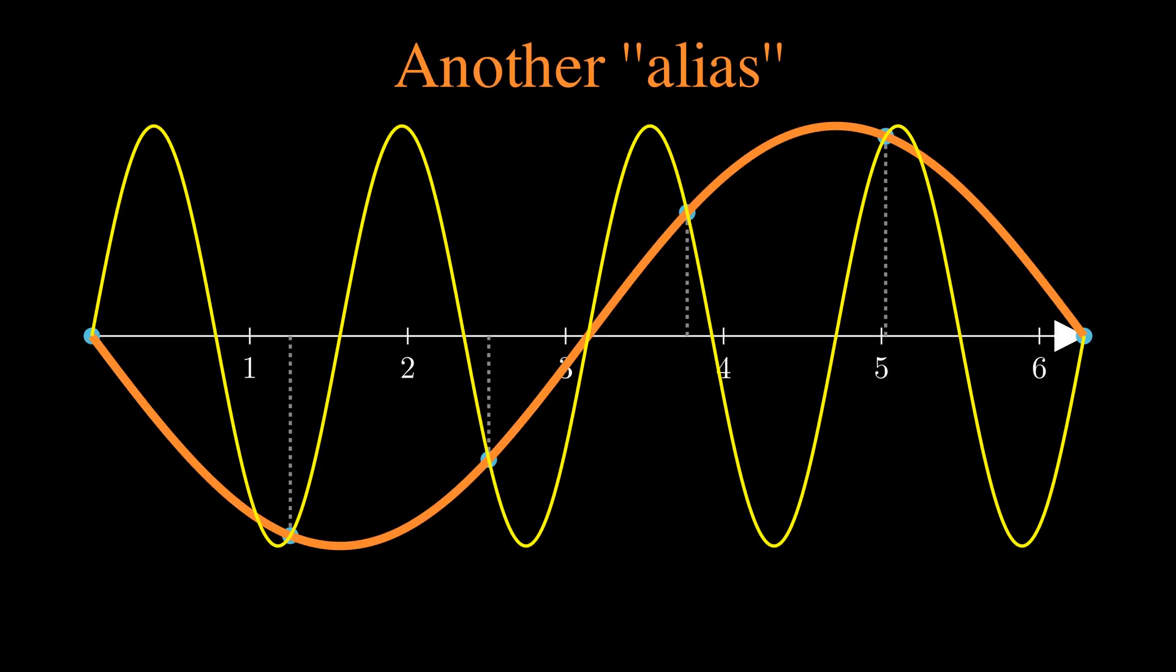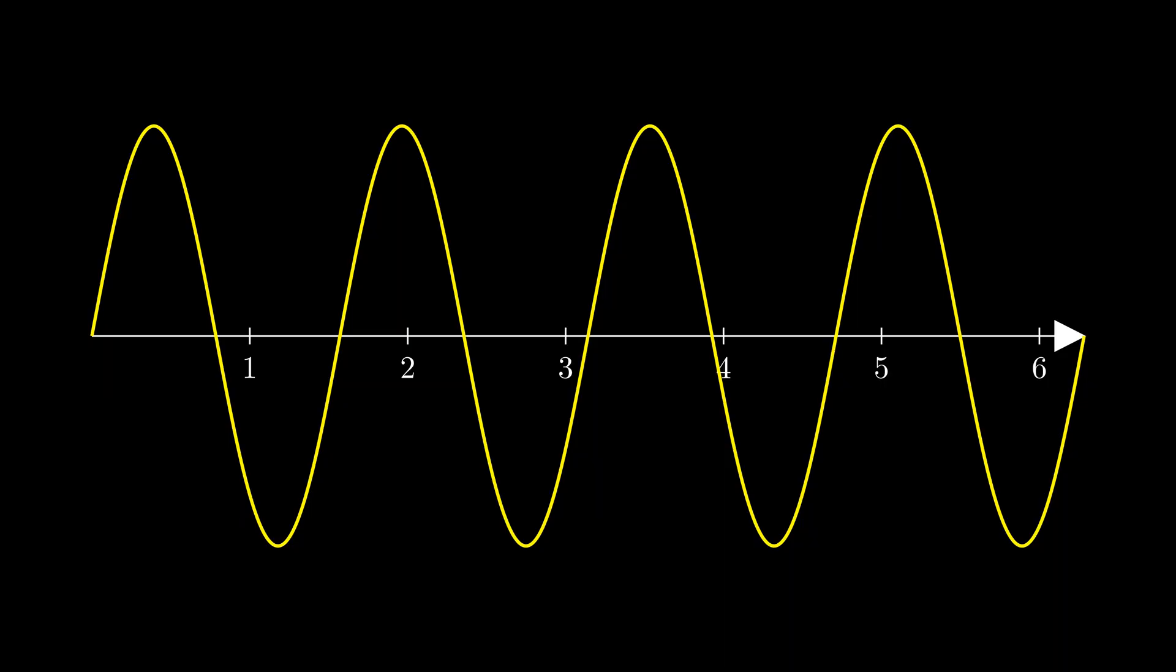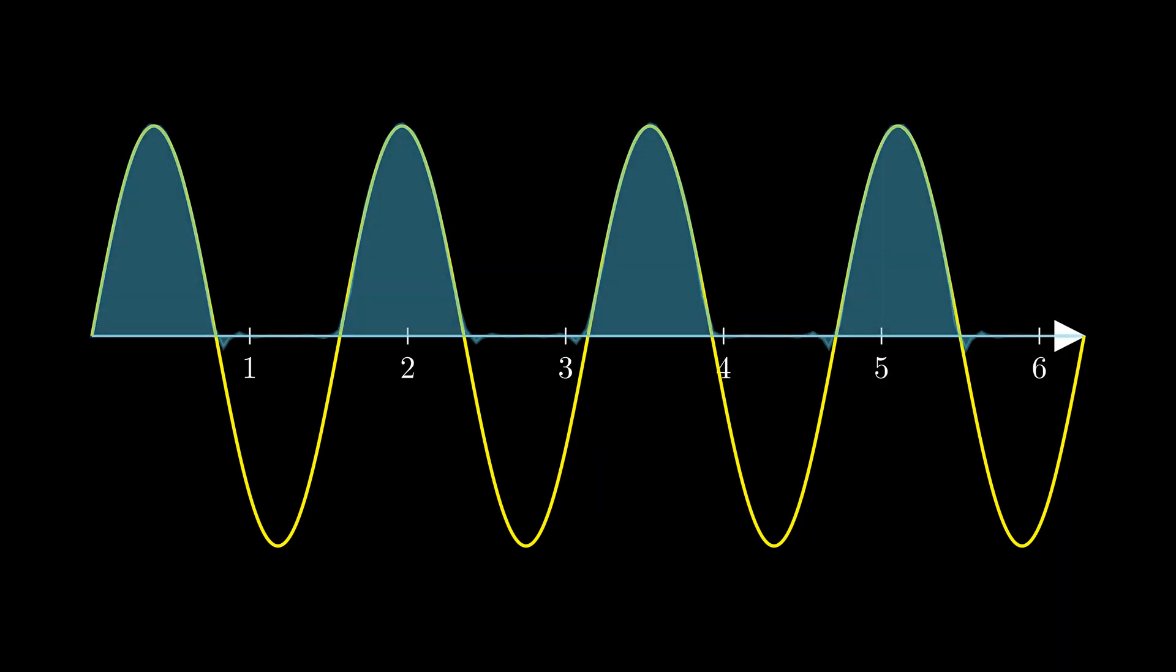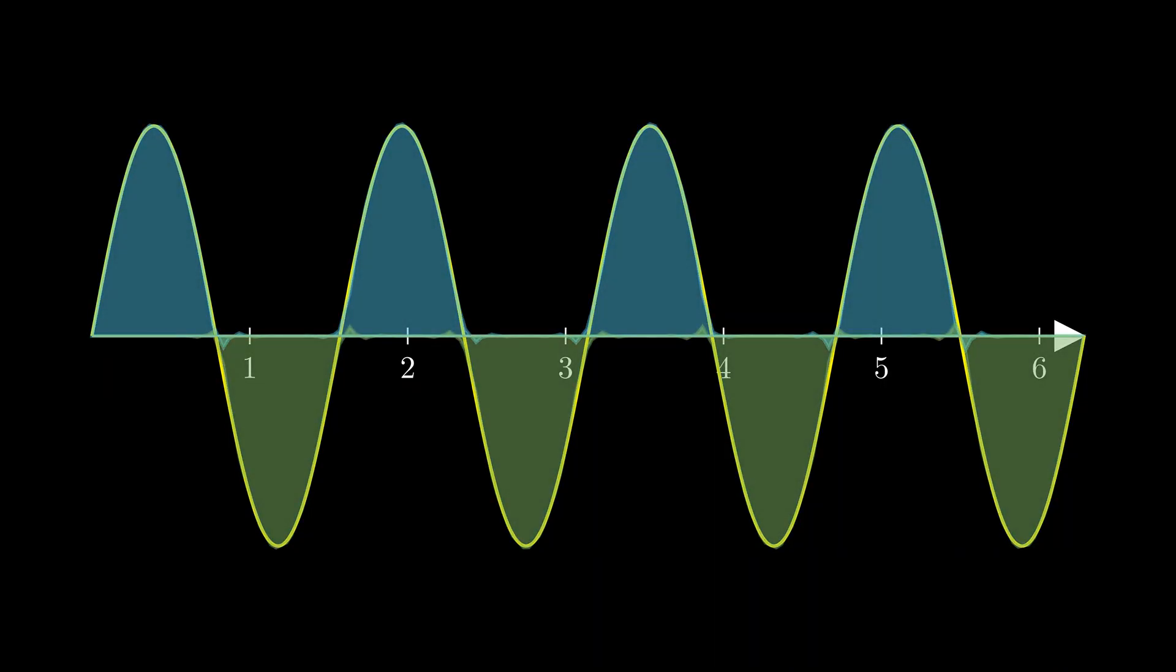So how many samples do we need to avoid this problem? Well, a sine wave oscillates between positive and negative values. So intuitively, we need at least one sample for the positive lobe and one for the negative lobe. This means that we need at least two samples per period.